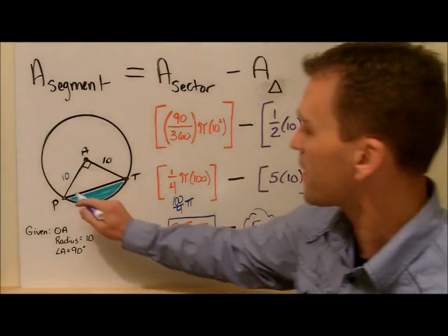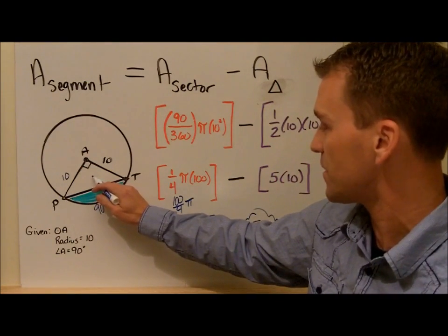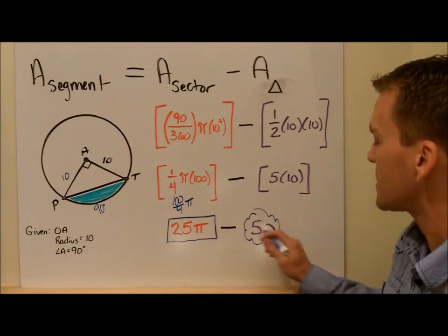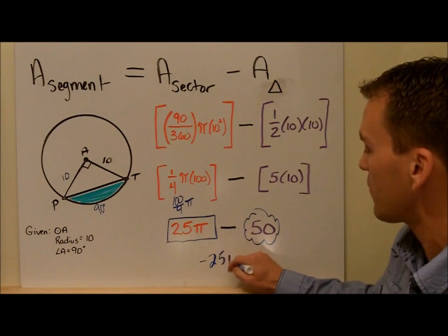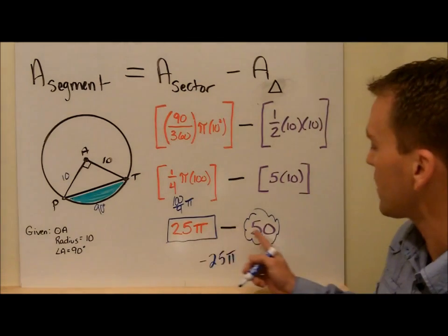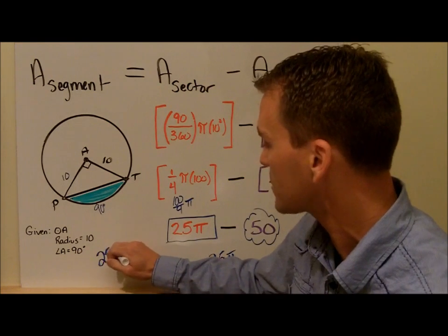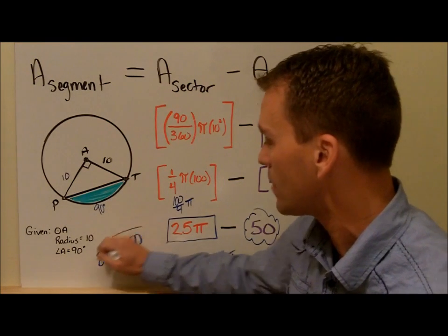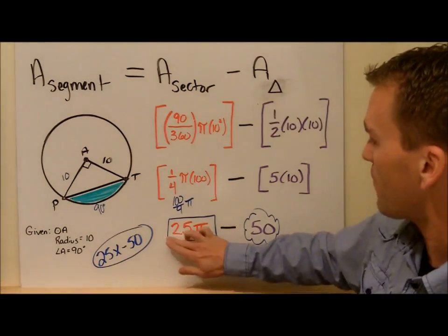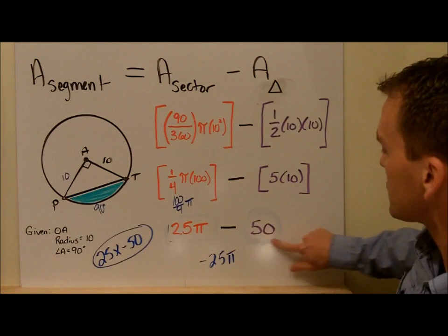So the overall area of this segment is the sector area of 25π minus the triangle area of 50. Be careful — 25π minus 50 is not negative 25π. No, that's not correct, because these two things are not like terms. Going back to algebra, it's as if you have 25x minus 50 — there's no way you can simplify that, so you keep it that way. Same exact concept: you keep 25π and you keep the 50 exactly as it is. That's the answer.